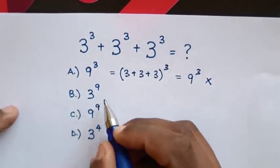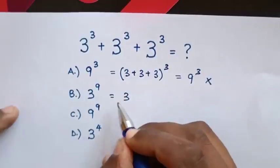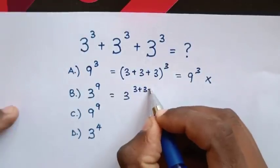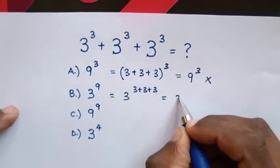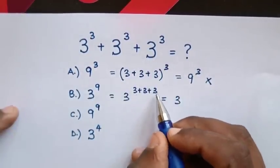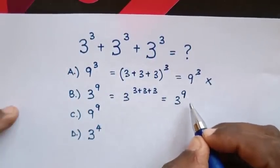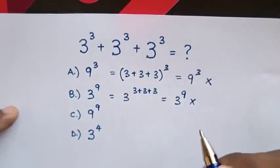From B, 3⁹ equals 3^(3+3+3), which equals 3⁹. This is also wrong.